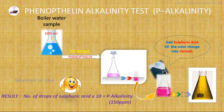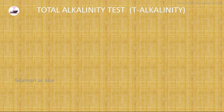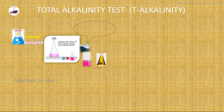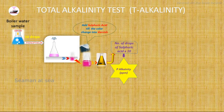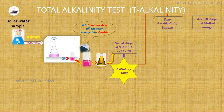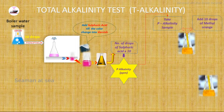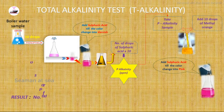Now we will see the total alkalinity testing procedure. To conduct the total alkalinity test, we use the phenolphthalein alkalinity sample already prepared. We add 10 drops of methyl orange into that sample. The color changes to orange. Then we add sulfuric acid until the color changes to pink, and we stop adding the sulfuric acid.